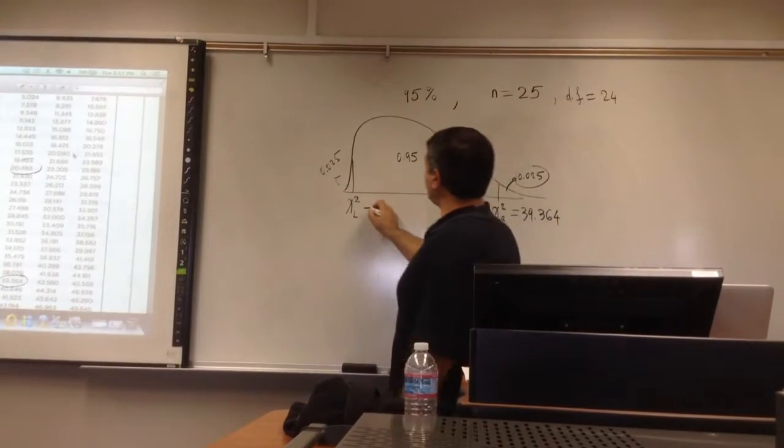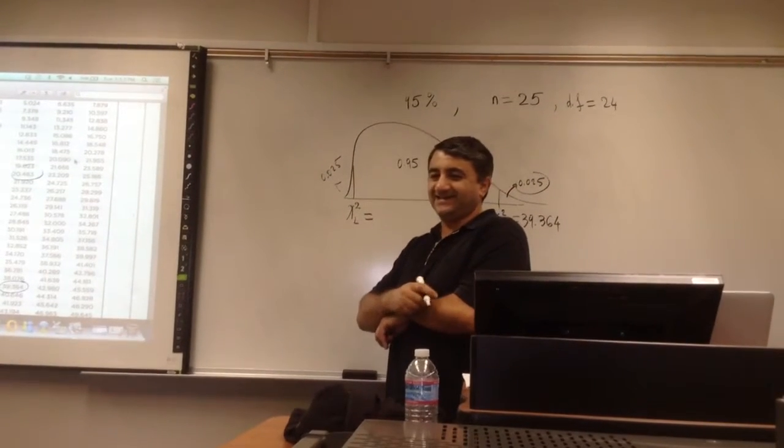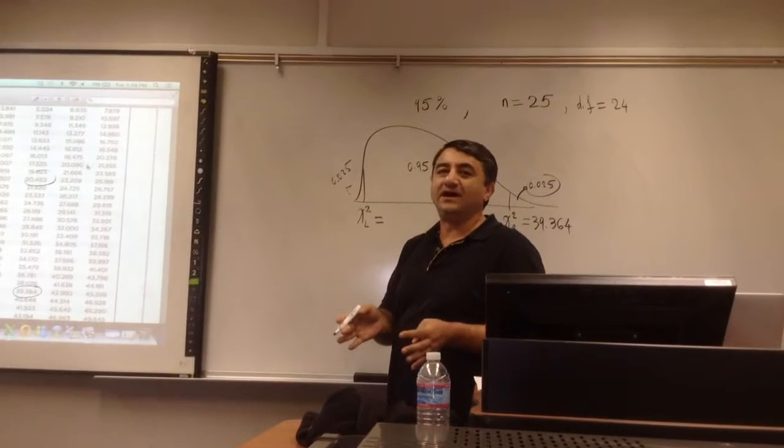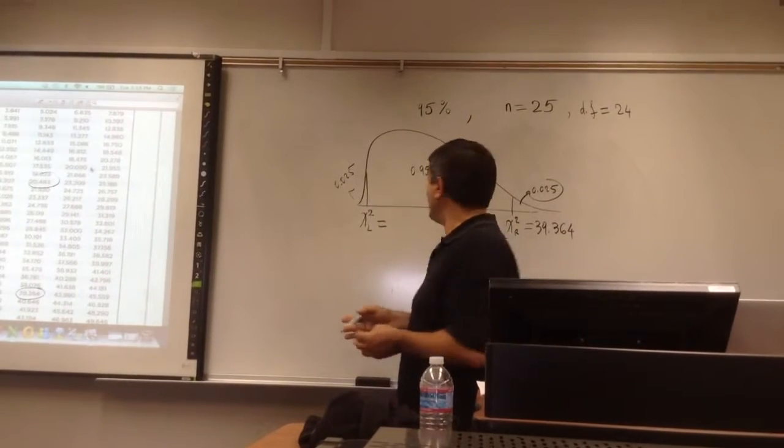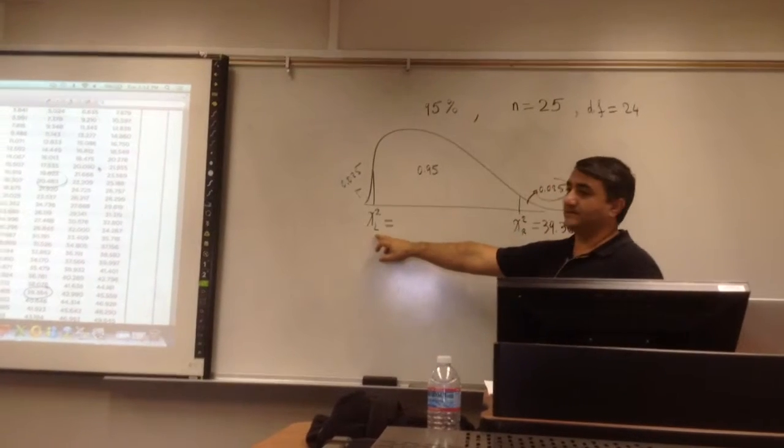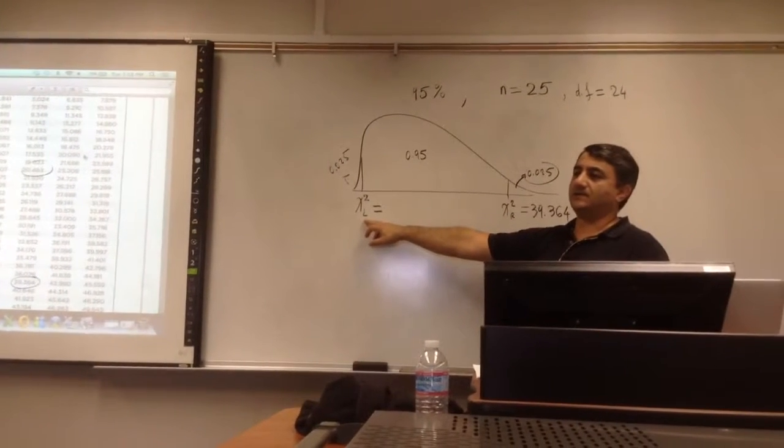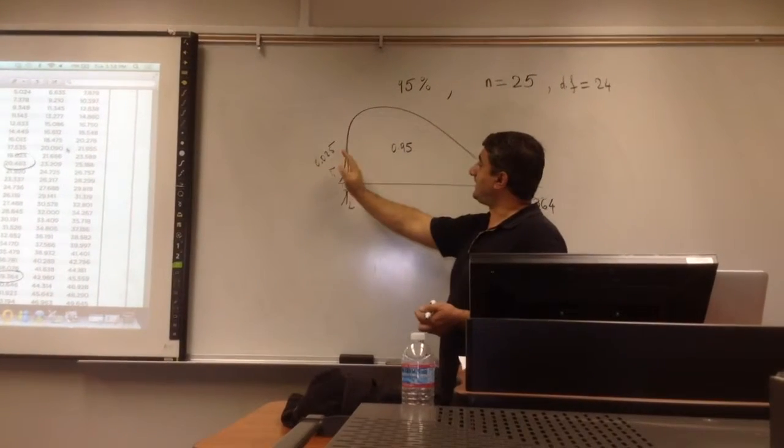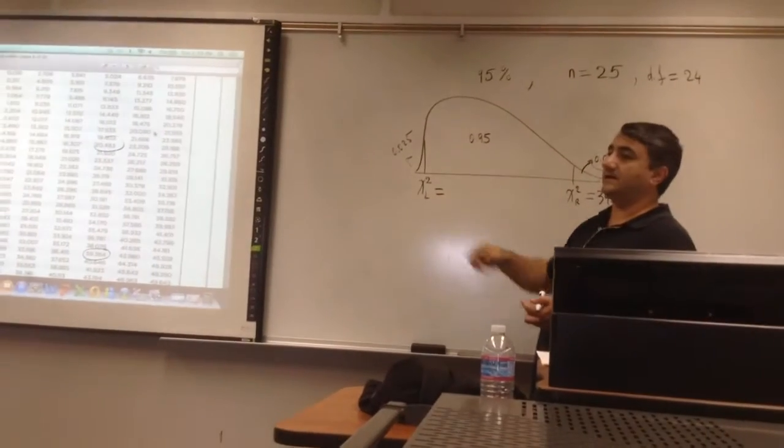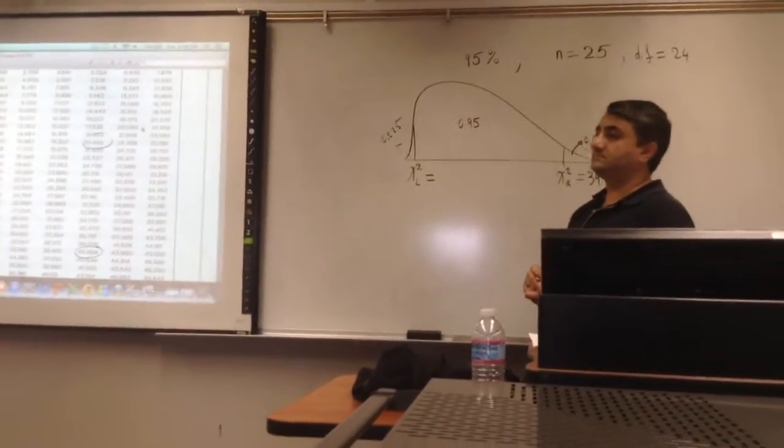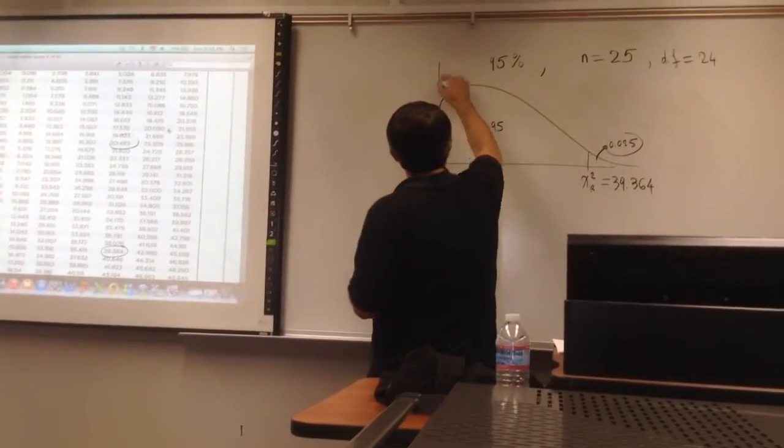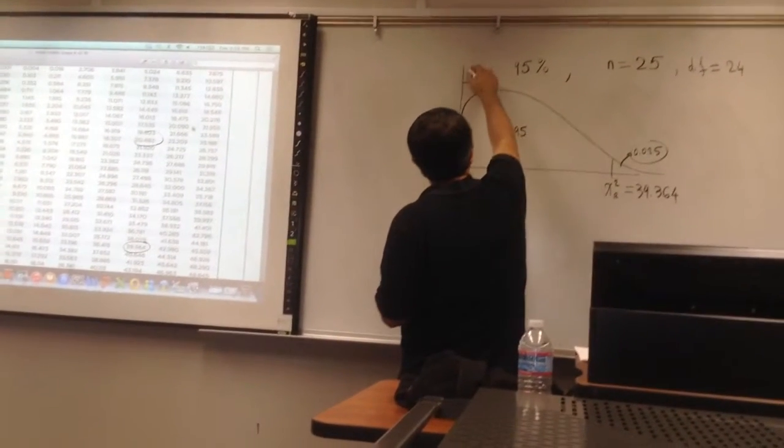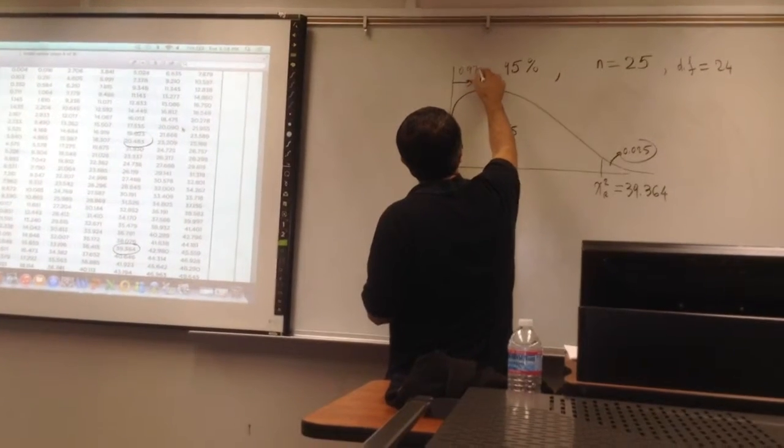So what we do is, remember the table is set up to always look at the right areas and read the alpha. They're reading the body. So what is the right area to the right of the critical value on this one? So if this is 2.5%, this is 2.5%, what's the area to the right of the critical one? 97.5%. Yeah, 97.5%. So you always look for the area, 95% plus 2.5%, you get .975.